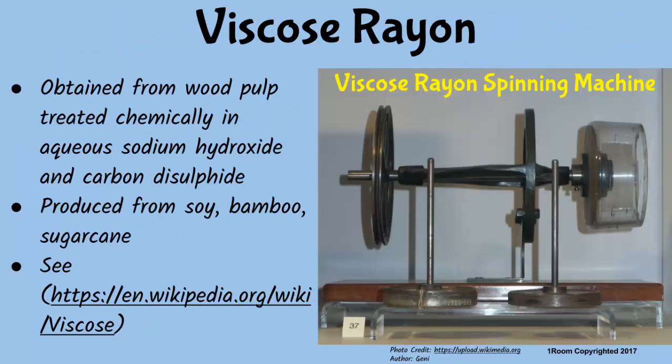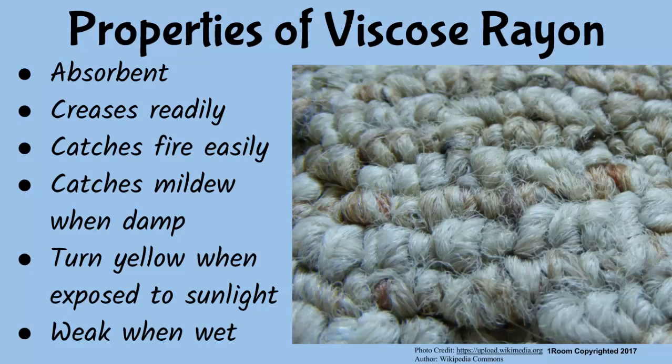Viscose rayon is a product of cellulose obtained from wood pulp, which is treated chemically in aqueous sodium hydroxide and carbon disulfide. Viscose rayon can be produced from a variety of plants including soy, bamboo, and sugarcane. For more information on the process, you can check Wikipedia or the Kenya National Library.